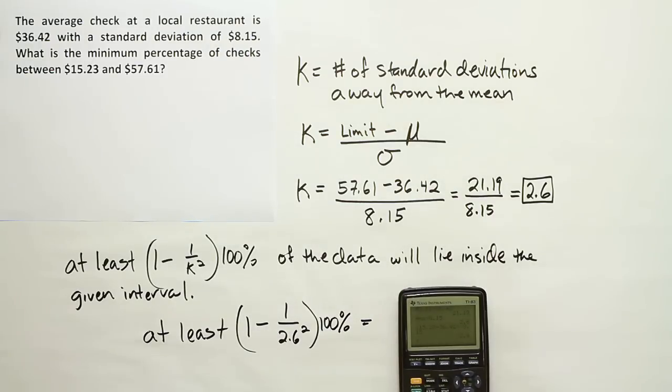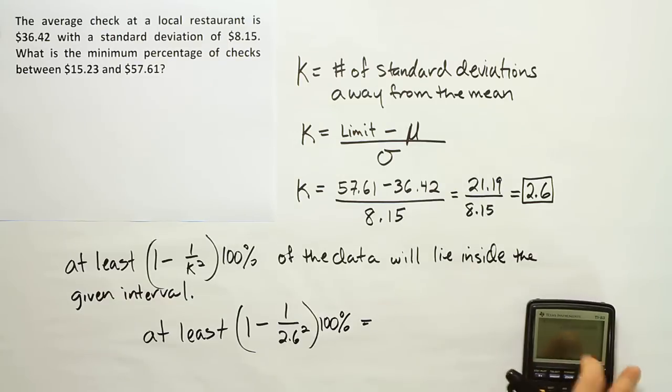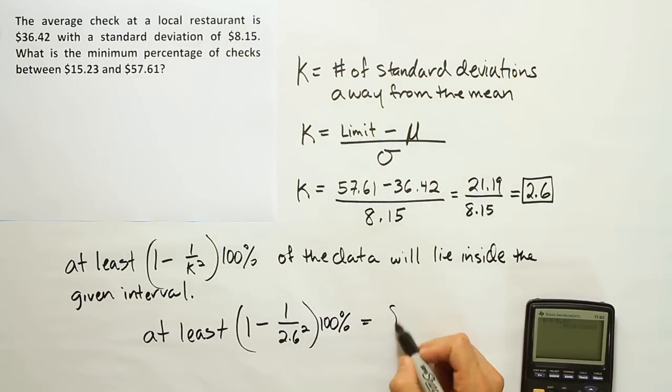And let's see what we get when we do that. So we'll have 1 minus 1 divided by 2.6 squared. And when we finish that, we get a decimal 0.852 basically. And multiplying by 100% will give us 85.2%.